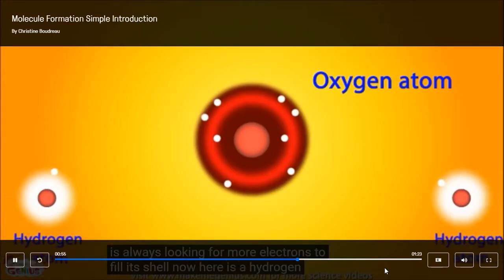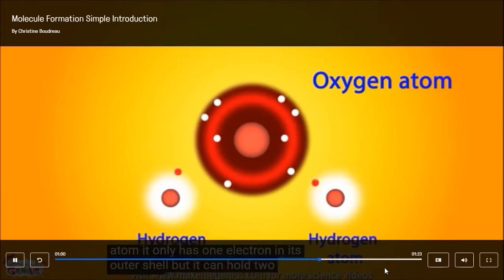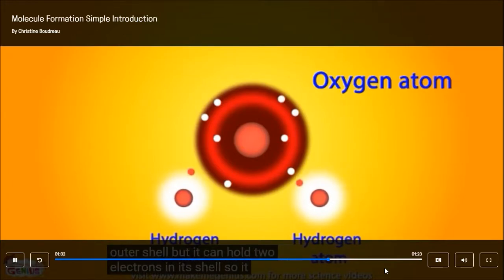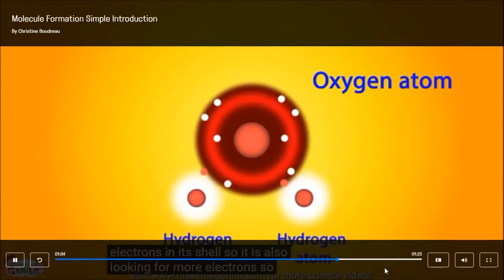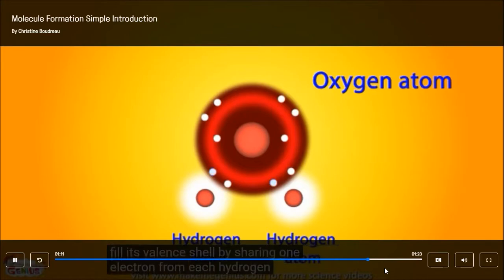Now, here is a hydrogen atom. It only has one electron in its outer shell, but it can hold two electrons in its shell. So it is also looking for more electrons. So the oxygen atom bonds with two hydrogen atoms to fill its valence shell by sharing one electron from each hydrogen atom.